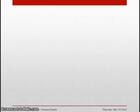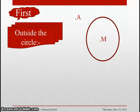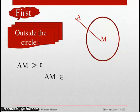Now we will explain what is the meaning of position of a point with respect to a circle. The first position is a point outside the circle. If we have a circle M in the plane and a point A in the same plane, we can see that point A is outside the circle. This means the distance AM between point A and the center is more than the radius of the circle.